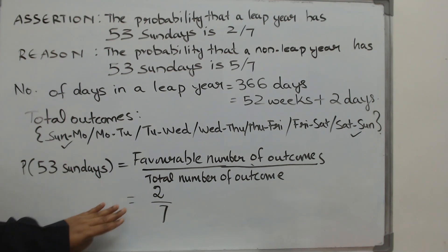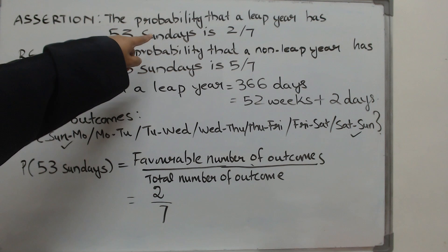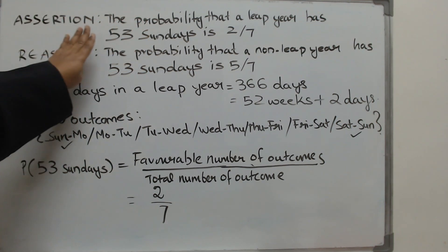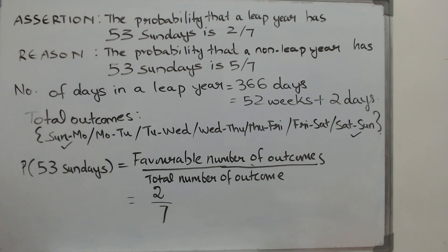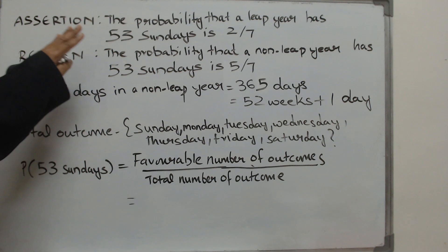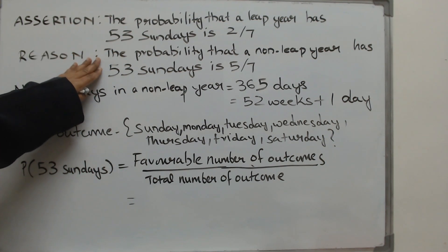Now this is the probability that a leap year will have 53 Sundays. So your first statement is correct. Now let us see if the second statement is correct. Now let us move on to the next statement which is the reason that is given here. Let us find out if this one is correct.